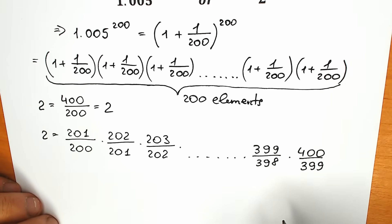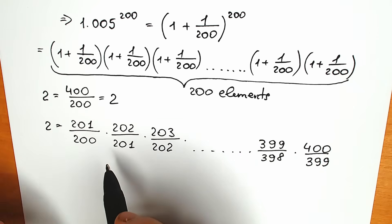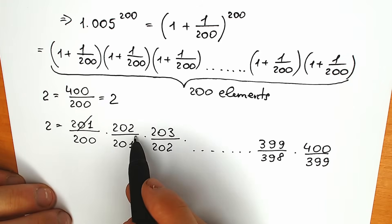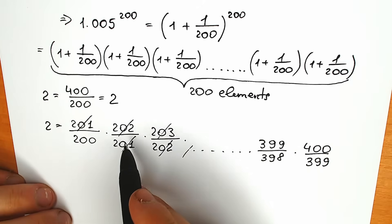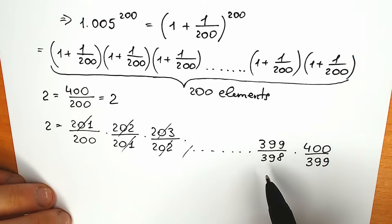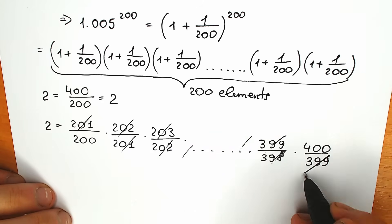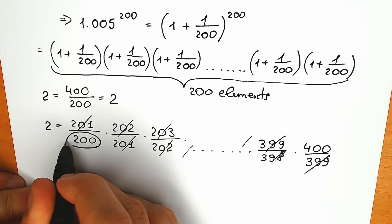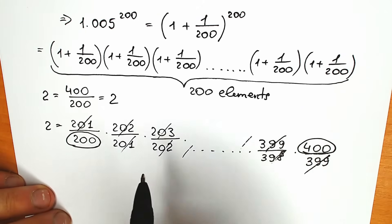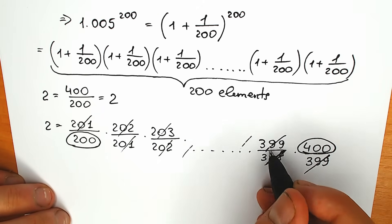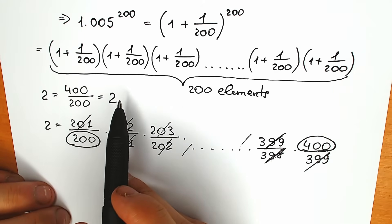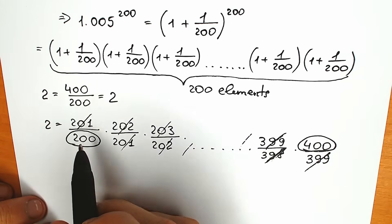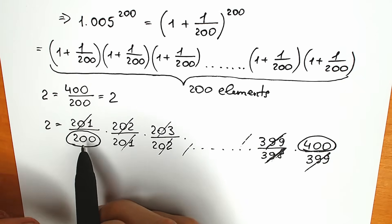Let's look closely at this expression. We can easily cancel a lot of values: 201 cancels with 201, 202 cancels with 202, 203 with the next one, and so on. We cancel 398 with 398, 399 with 399, and we end up with 200 in the denominator and 400 in the numerator — giving us 400 over 200, which equals 2. This is our proof that the product equals 2, but we don't need to cancel it just yet.